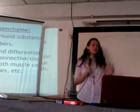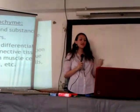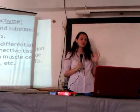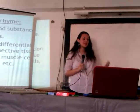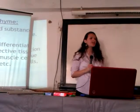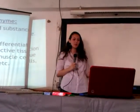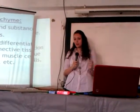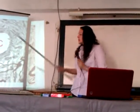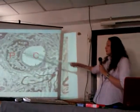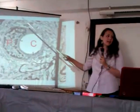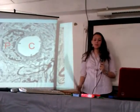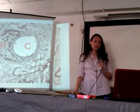The functions of mesenchyme include secretion of ground substance, secretion of fibers, and most importantly, proliferation and differentiation into other types of connective tissue cells, such as fibroblasts, pericytes, and adipose cells. It can also differentiate into smooth muscle cells, blood cells, and bone cells. Pericytes originate from mesenchyme, contain actin and myosin, and by their contractions they cause vasoconstriction, which is very important in regulating arterial blood pressure.